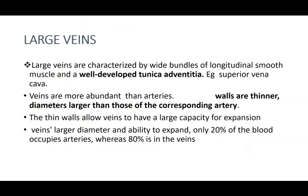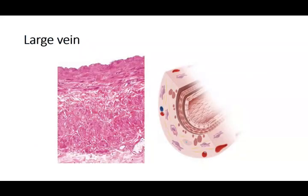Venules lead to medium-sized veins and then to large veins. Large veins are characterized by wide bundles of smooth muscles and well-developed adventitia. In special veins there can be muscle fibers in the media. Veins are more abundant than arteries; their walls are thinner and their diameters are larger than the corresponding arteries, allowing expansion. About 80 percent of blood is in the veins because their walls are thinner and expand, making them reservoir vessels. The slide shows a large vein with a very small media and the most prominent adventitia.